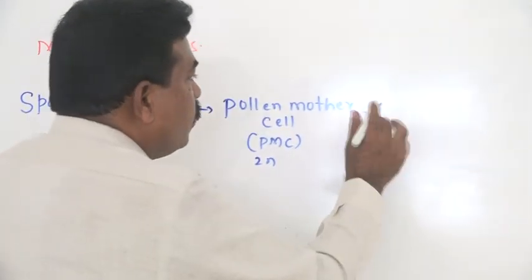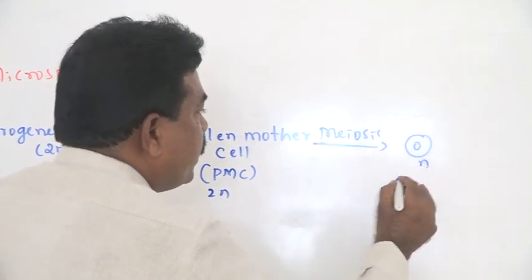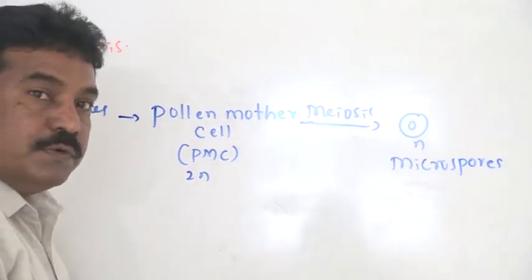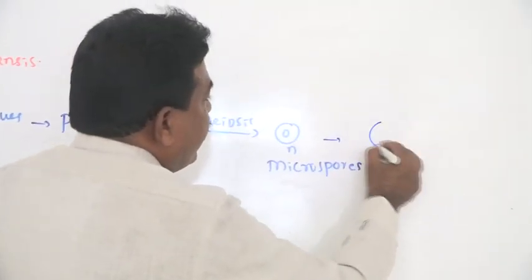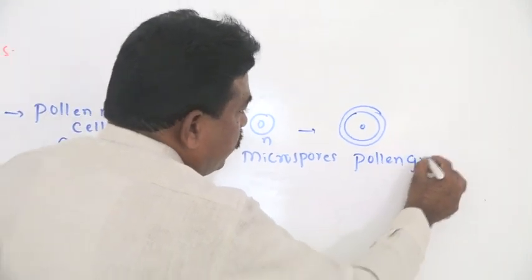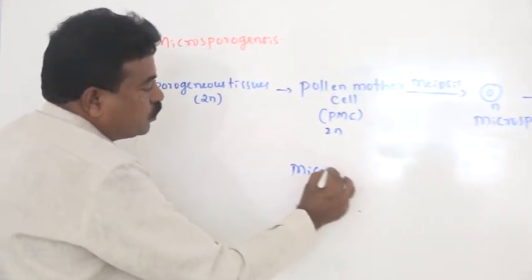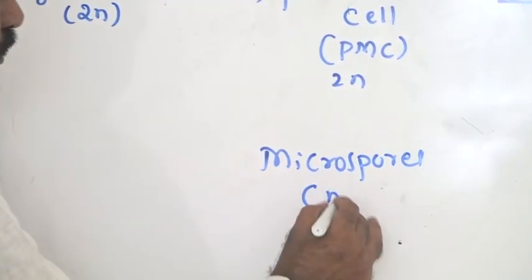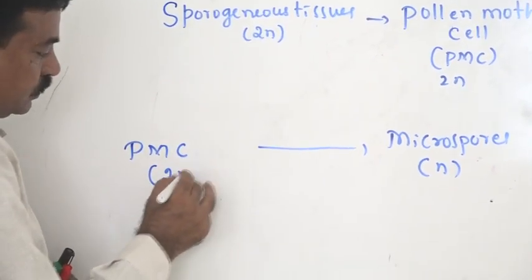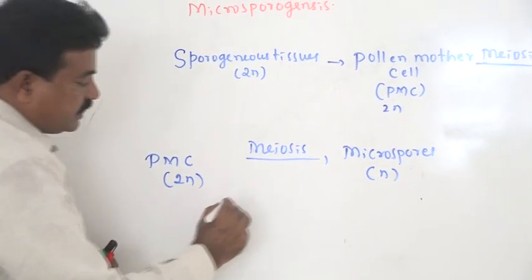The pollen mother cell undergoes meiosis, and by meiosis there is a formation of haploid cells — that process we call microsporogenesis, producing microspores. When these microspores develop an exine and intine, they themselves become pollen grains. Therefore, the process of formation of haploid microspores from diploid pollen mother cells by meiosis is called microsporogenesis.